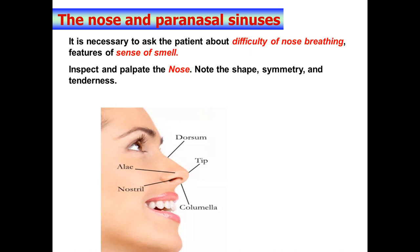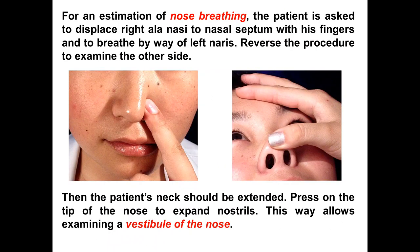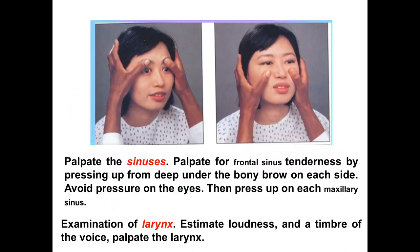Examination of the nose and paranasal sinuses: it is necessary to ask the patient about difficulty of nasal breathing or features of sense of smell. Inspect and palpate the nose, note the shape, symmetry, and tenderness. To estimate nasal breathing, the patient is asked to displace the nasal septum with a finger to one side and breathe through the other nostril. You should inspect both sides. Also press the tip of the nose to expand the nostrils — this allows examination of the vestibule of the nose. The frontal sinus and maxillary sinus should also be palpated.